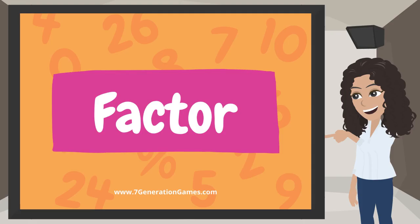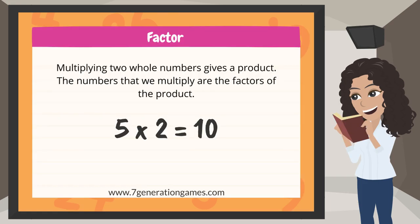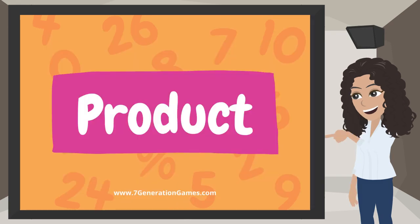Multiplication Terms: Factor. Multiplying two whole numbers gives a product. The numbers that we multiply are the factors of the product. For example, 5 times 2 equals 10 — 5 and 2 are the factors.